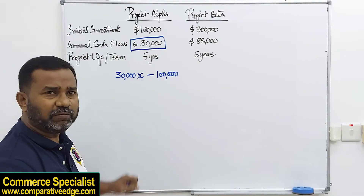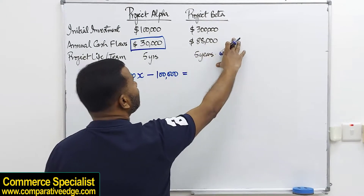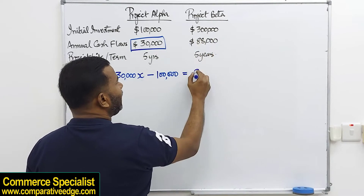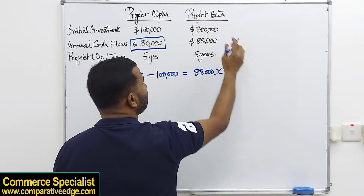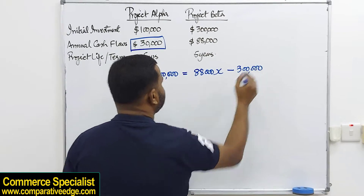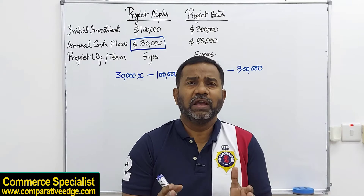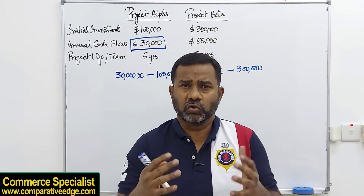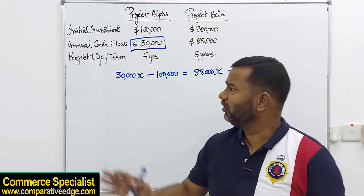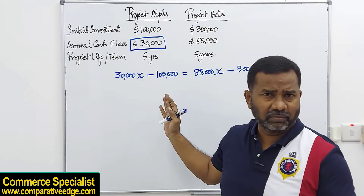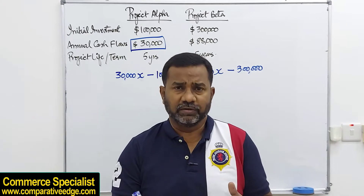Whatever NPV we get for project Alpha should equal the NPV of project Beta. For project Beta the cash flows are 88,000 times the annuity factor X, minus the initial investment of 300,000. When I solve this equation for X I will get the crossover rate — the rate at which we are indifferent investing in project A or B, irrespective of their different initial investments and cash flows.